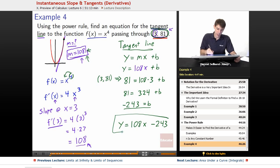y equals mx plus b with our m and b filled in. And now we have the tangent line that passes through the point 3 comma 81 and is tangent to the curve created by x to the fourth. Pretty cool.